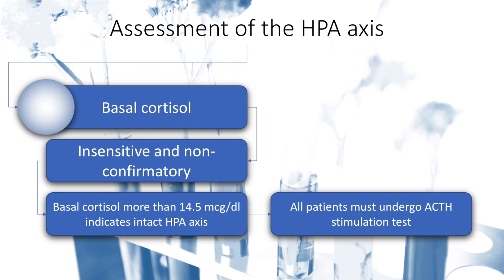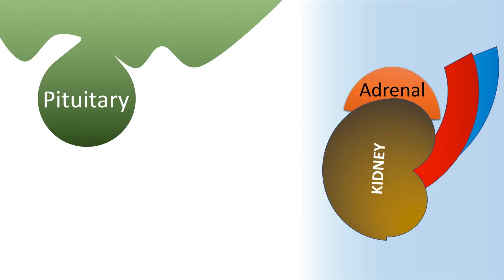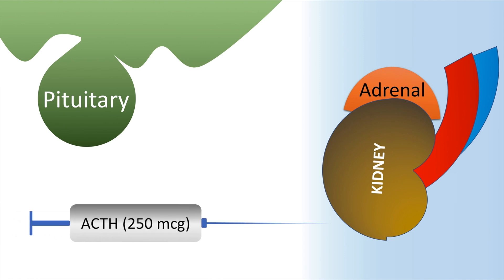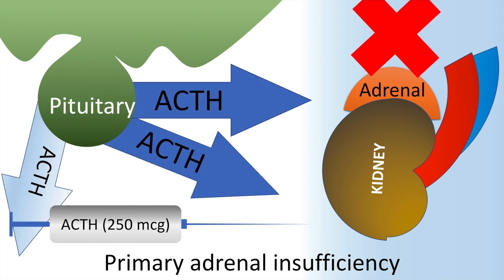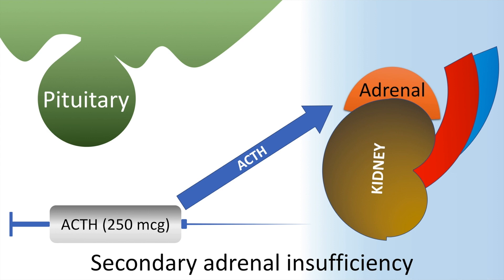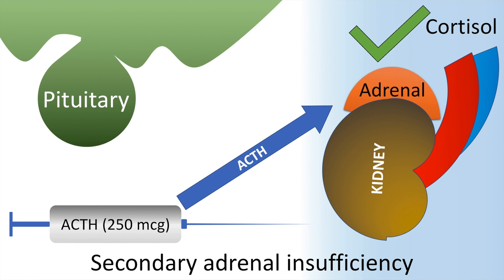However, most patients will require an ACTH stimulation test. In this test, we give the patient 250 micrograms of ACTH, available in a pre-filled syringe. This preparation is called cosyntropin or tetracosactin in certain countries. In primary adrenal insufficiency, the ACTH level is already high; therefore, giving the patient a little more ACTH will not stimulate the adrenals to secrete any cortisol. In contrast, in secondary adrenal insufficiency, since there is an absolute deficiency of ACTH, giving 250 micrograms of ACTH will result in the adrenals secreting cortisol.